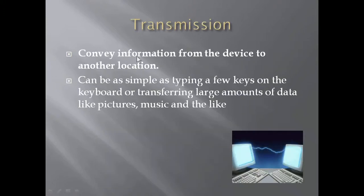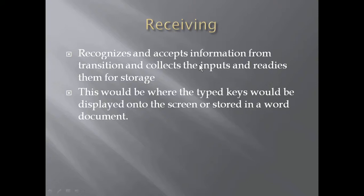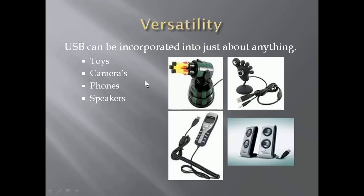The ultimate goal is to transfer data, so there has to be encoding. The transformation confirms information from one device to another location — this can be as simple as typing a few keys on the keyboard or transferring large amounts of data like pictures and music. When one device is transmitting, the other has to receive. Receiving means recognizing and accepting the information from the transmission, collecting the inputs, and storing them in the USB.